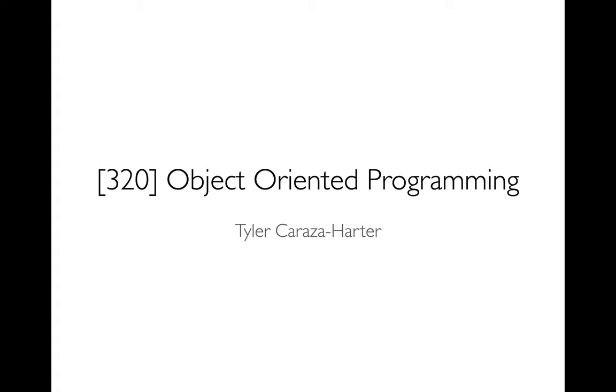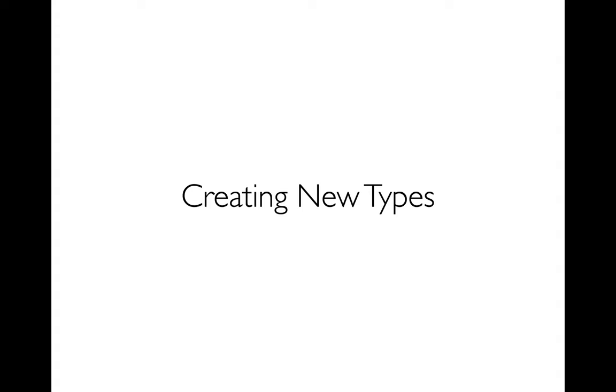We're going to be using this new style for the rest of the semester. Also, if you go on and read other books — for example, a lot of machine learning books out there — they're just going to assume that you know how to do object-oriented programming. So it's a very important topic. They call it object-oriented programming, and you've been dealing with objects for a long time. You've seen how you can create multiple list objects or multiple dictionary objects. But really, what object-oriented programming is about is not creating new objects, but creating new types of objects.